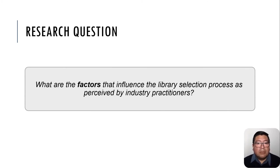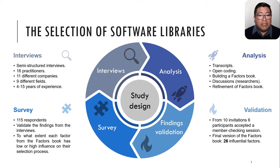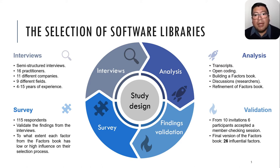For that reason, we want to explore what factors influence library selection. Our study design consists of four different stages. First, we conducted semi-structured interviews. Sixteen practitioners were interviewed, coming from 11 different companies, nine different fields, and with between four and 15 years of experience. With the qualitative data collected, we transcribed all the interviews, performed open coding, and then built a factors book. This factors book was refined through many discussions with co-authors until we reached a final draft.